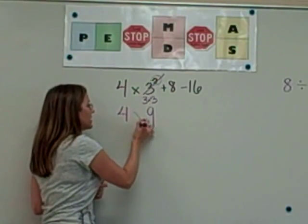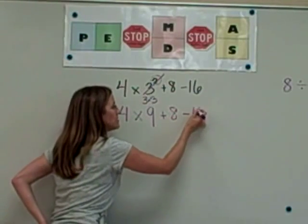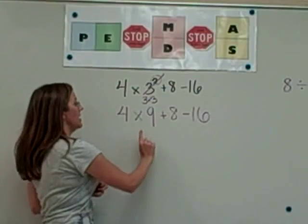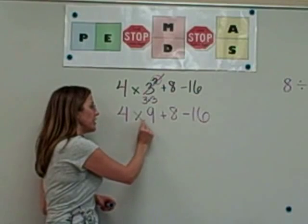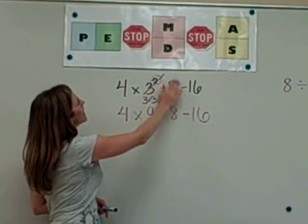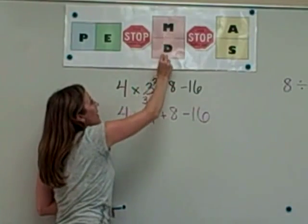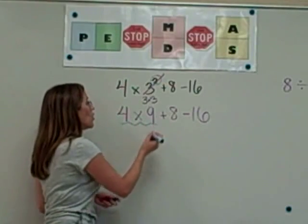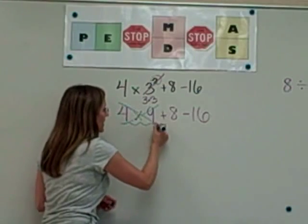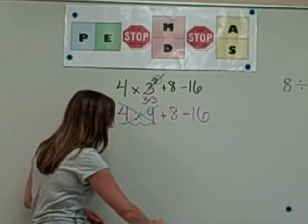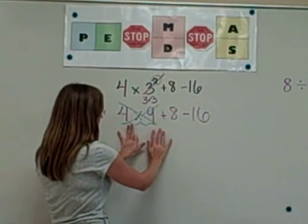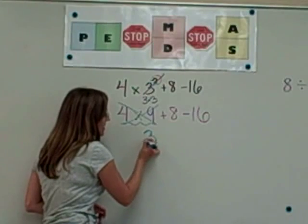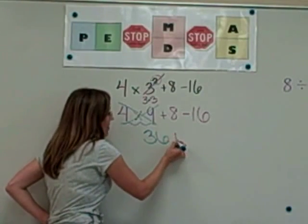And then I need to rewrite the rest of the problem to determine what is my next step. I'm going to try and change colors with each step so that it's easier to follow. Next, the operations that I see, I have a multiplication, I have an addition, and I have a subtraction. Well, looking up here, it is my multiplication that comes next on the chart. So the proper order to solve this, I'm going to be looking at multiplication next, which will be 4 times 9. A lot of you know the number tricks with 9. If you have 10 fingers up and you put the 4th finger down, you will have 36 as your answer. 4 times 9 is 36.